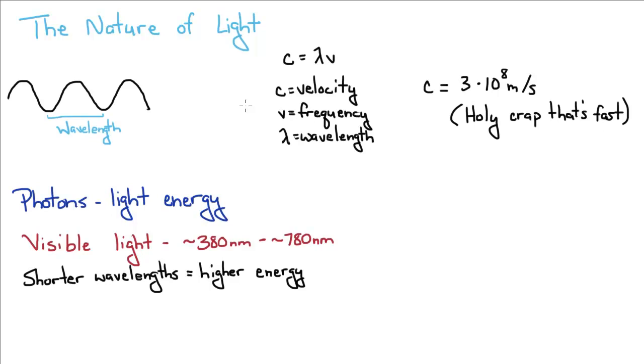Light has three different properties. You've got your velocity which is 3 times 10 to the 8 meters per second, which is holy crap that's fast. But this velocity is not going to change for the most part. So the properties of light are based on their frequency and their wavelength.